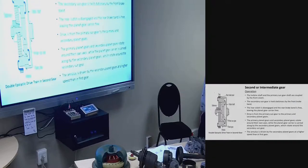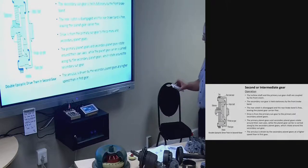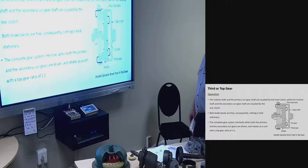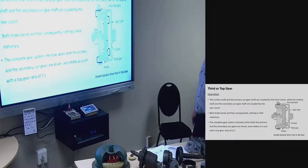D — drive: used for general driving; this is the standard position for all road driving. First/low gear operation: the turbine shaft and the primary sun gear shaft are coupled by the front clutch. The planet gear carrier is held stationary by the rear brake band. The rear clutch is disengaged and the front brake band is free, leaving the secondary sun gear free. Drive is from the primary sun gear to the primary and secondary planetary gears, which rotate around their own axis, to the annulus which is part of the output shaft.